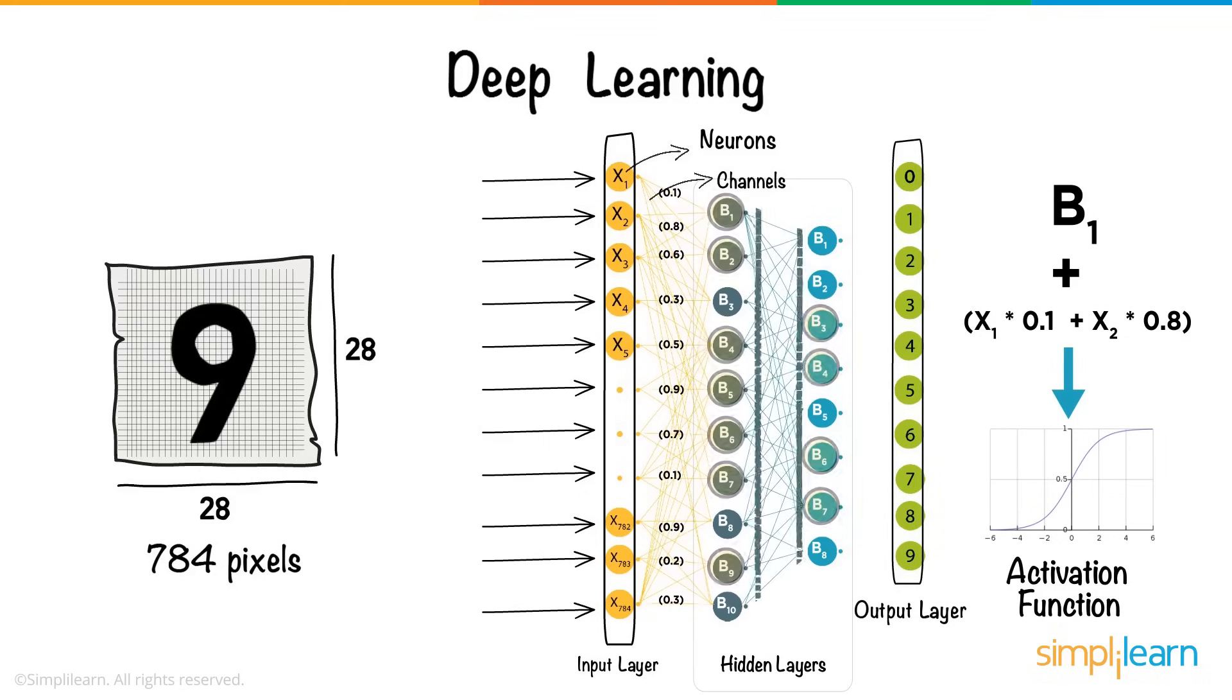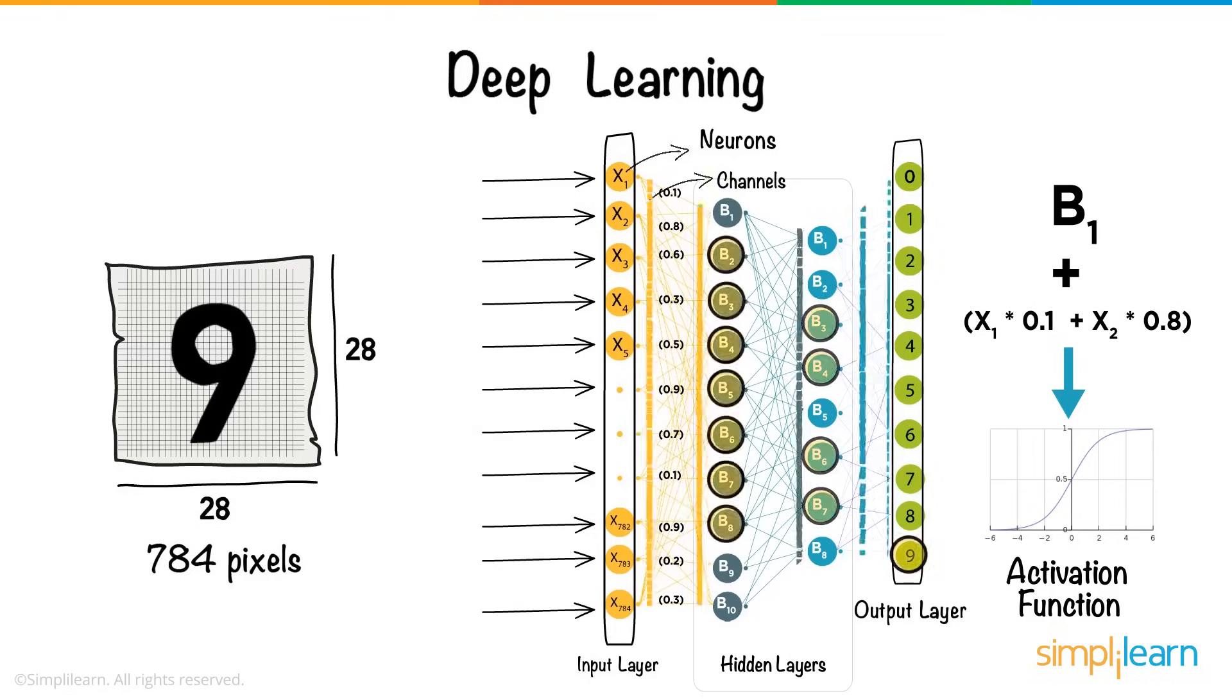Every activated neuron passes on information to the following layers. This continues up till the second last layer. The one neuron activated in the output layer corresponds to the input digit. The weights and bias are continuously adjusted to produce a well-trained network.